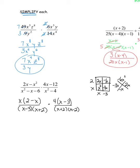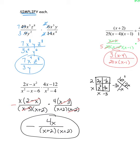Now for canceling: I have (x − 3) in top and bottom — those cancel. I have (x − 2) and (2 − x) — those are opposites, so they cancel leaving a negative. I also have (x + 2) in both denominators — those are both on the bottom, so they cannot cancel. The final answer is negative 4x over (x + 2)², and every problem in this set required factoring.